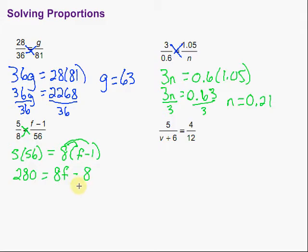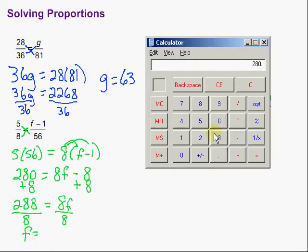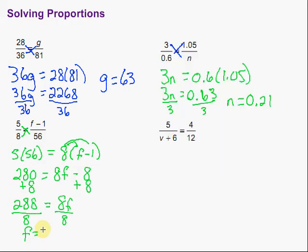Okay, again, now we're to something that hopefully looks familiar. We're going to go ahead and add 8, getting that f by itself. So we have 288. Oops, I'm getting a little ahead of myself there. Equals 8f. Then we're going to divide by 8. Divide by 8. And we're left with f equals 288 divided by 8. That gives us 36.